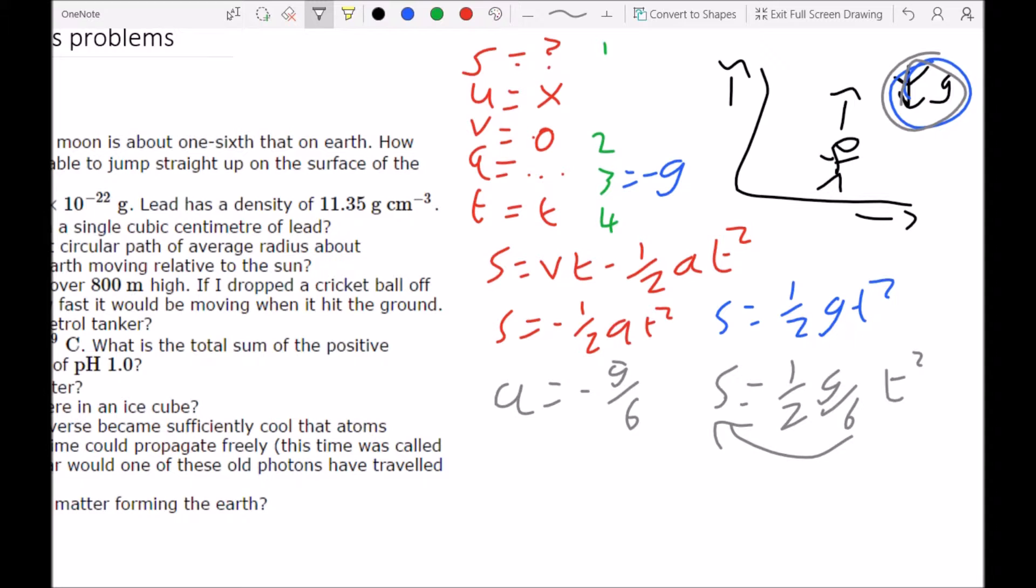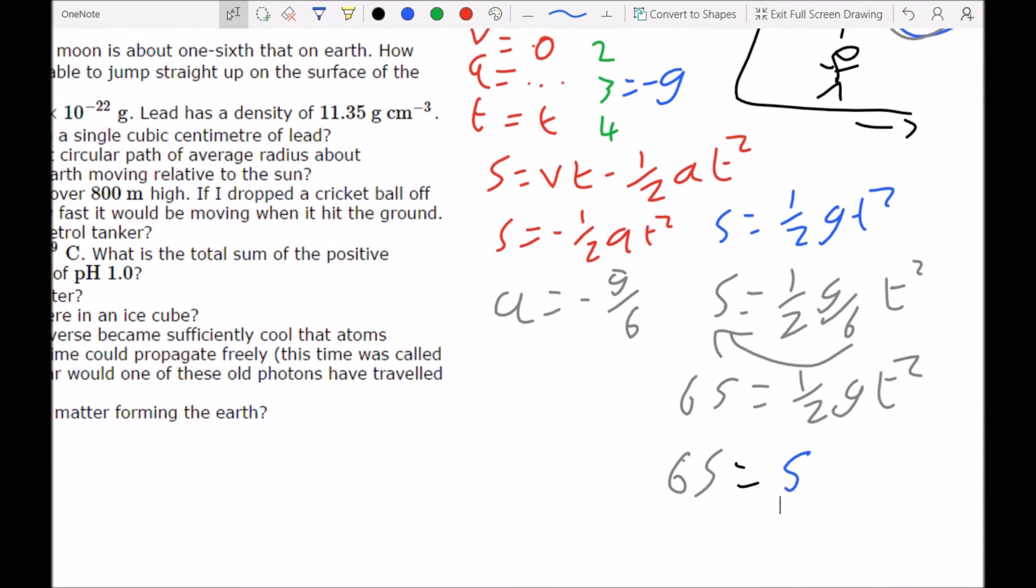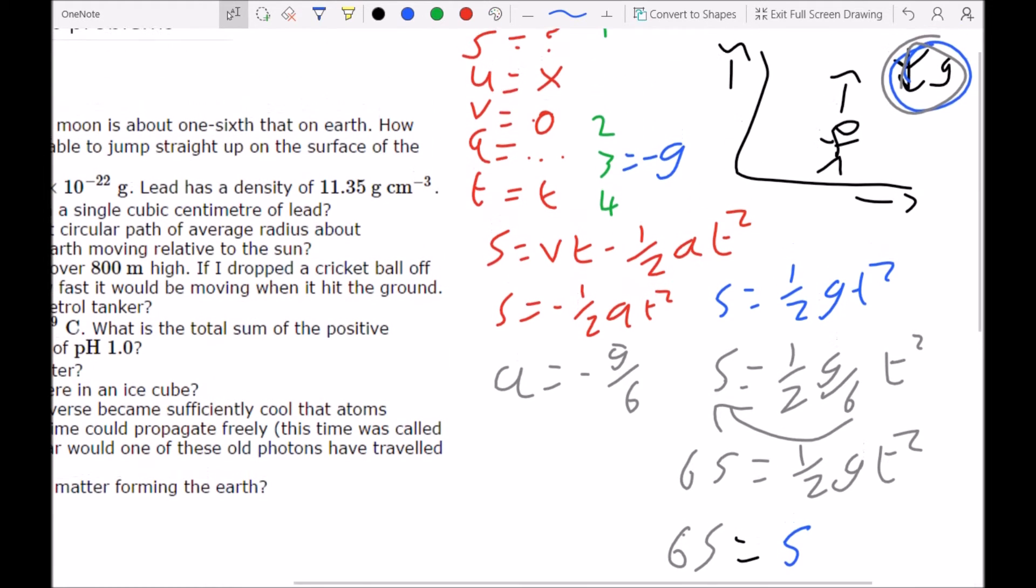So 6s equals half g t squared. Half g t squared is the height jumped on Earth, which means 6s for the Moon equals s on Earth. So with the values that you've used, you're going to get the height jumped on the Moon to be six times as large as that on the Earth.